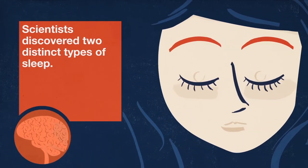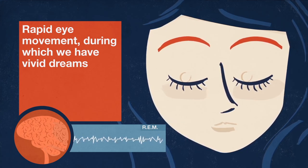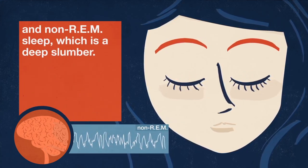Scientists discovered two distinct types of sleep. Rapid eye movement, during which we have vivid dreams, and non-REM sleep, which is a deep slumber.